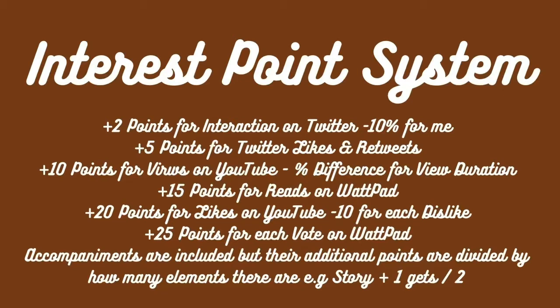I have created a point system for things that I'm calling interest points, to find out how my stories are doing based on interest. I'll be looking at interactions on Twitter, especially clicks on links and detail expansions, because that tells me that people have looked at my tweets and got access to stories from there, which means the thumbnail and tweet was strong enough to gain traction. I'll also be looking at likes and retweets on tweets, and views on YouTube. Interaction will get two points for each link, five points for each like and retweet. Views on YouTube will gain 10 points.